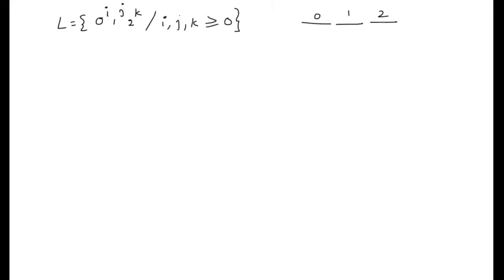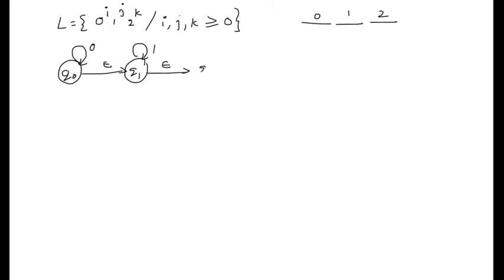Let's design the NFA with Epsilon transitions for this language. Any number of zeros: q0 on 0 moves to itself. Without reading any input symbol, it moves to q1 via an Epsilon transition. Any number of ones: q1 on 1 moves to itself. q1 on Epsilon moves to q2, which is the final state. q2 on 2 moves to itself, representing any number of 2s. So q0 is the starting state and q2 is the final state.